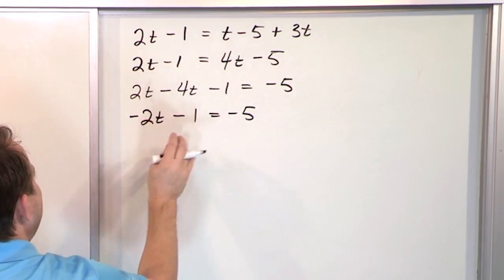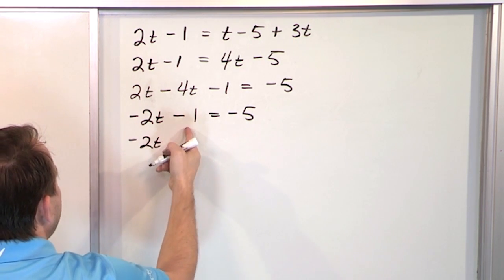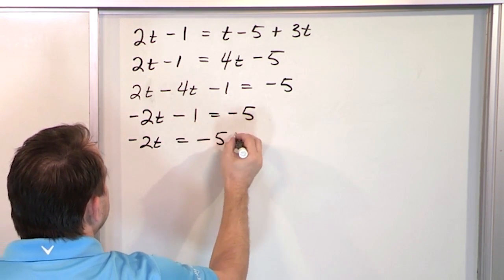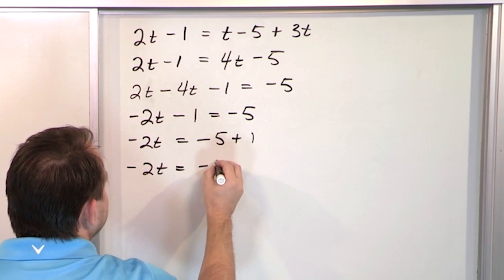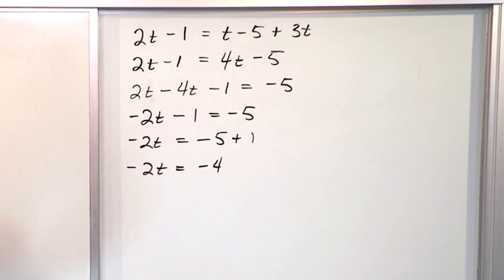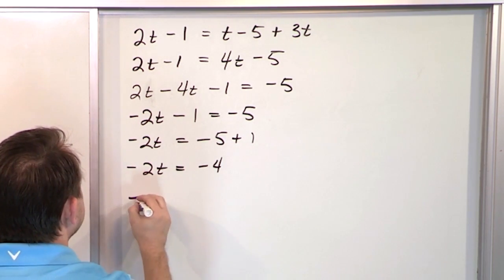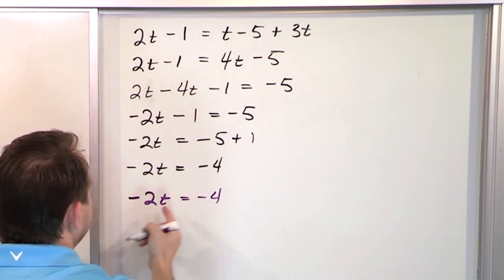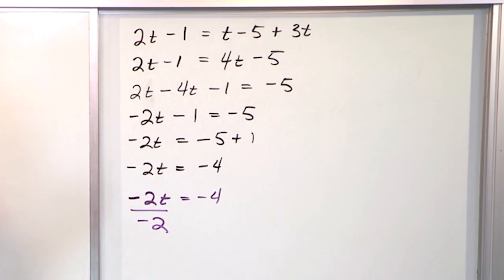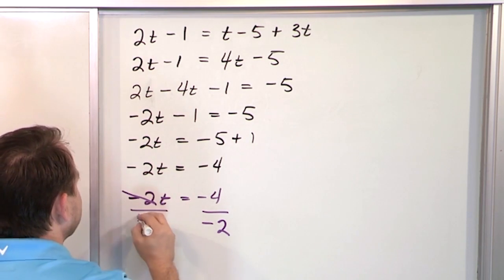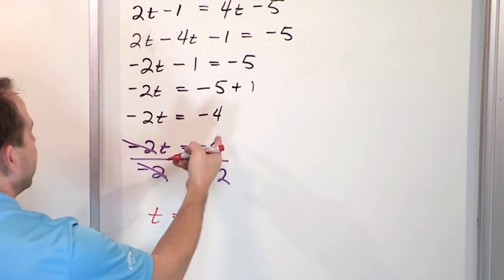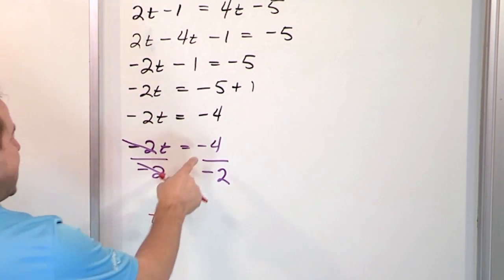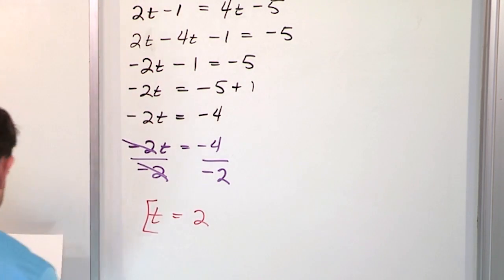Add 1 to both sides to move the constant: negative 2t equals negative 5 plus 1, which is negative 4. Then divide both sides by negative 2. Negative 4 divided by negative 2 is positive 2 because negative divided by negative is positive. So the answer is t equals 2.